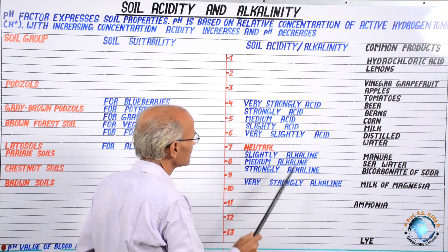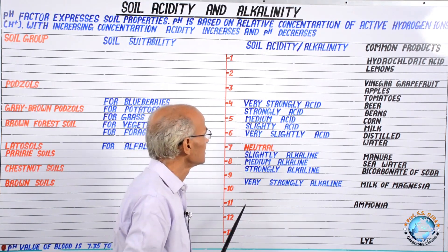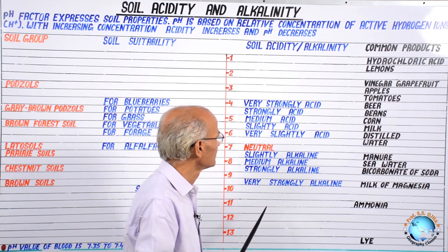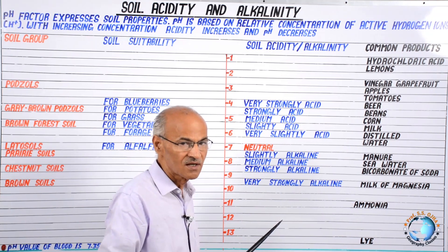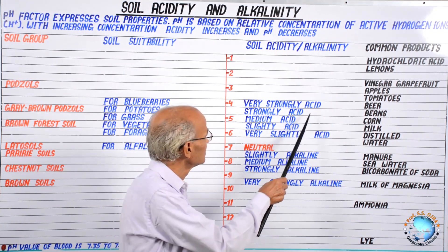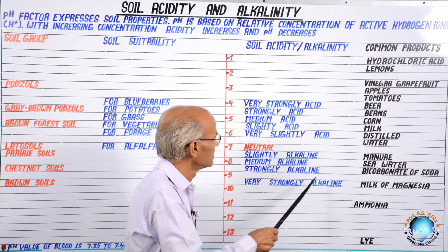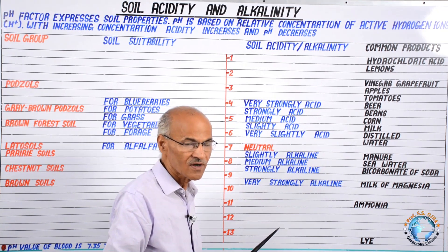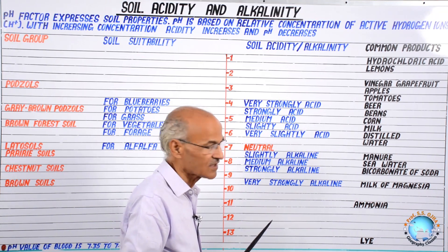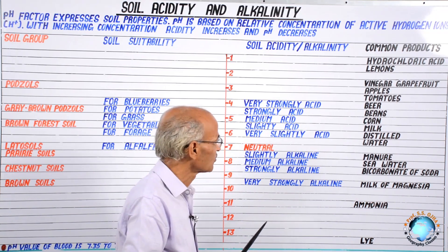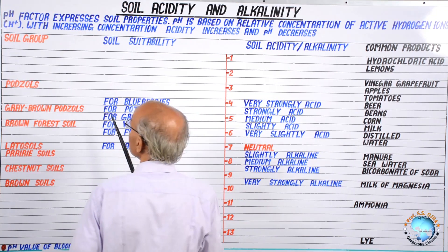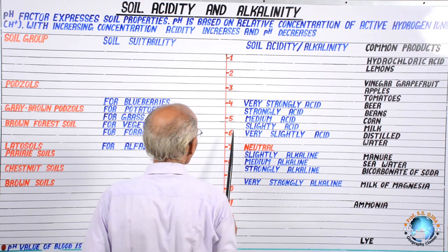Acidity means lemon; alkalinity means salt. Sometimes you might have seen that small children cut lemon and add salt to it and enjoy it. Thus, these two factors — acidity and alkalinity — are very important for the existence of our body. Both are found in nature, from nature into soil, from soil into the biosphere, and from the biosphere into our body.